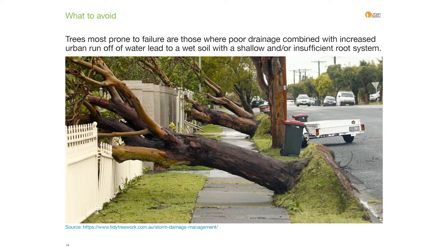One hot tip as a landscape architect: the outward symptoms of drought and waterlogging can appear exactly the same — wilting. If you see wilting, don't assume it's a drought condition; do more investigation, because waterlogged soil will result in the death of the tree. Trees most prone to failure are those where poor drainage combined with increased runoff leads to wet soil and shallow or insufficient root systems. That's why getting the soil volume right from the outset is imperative.